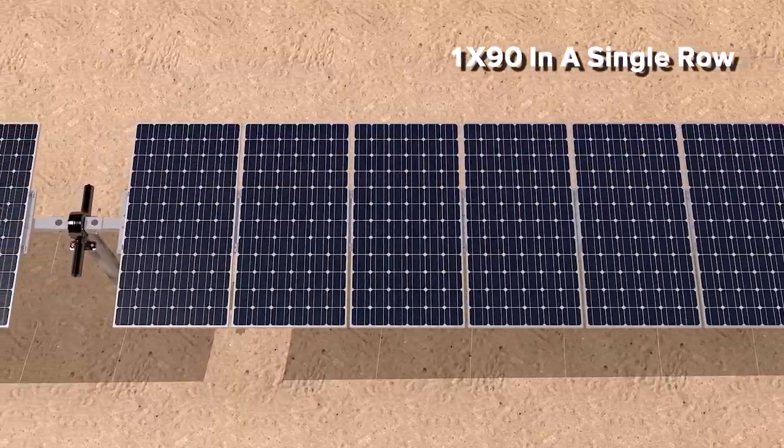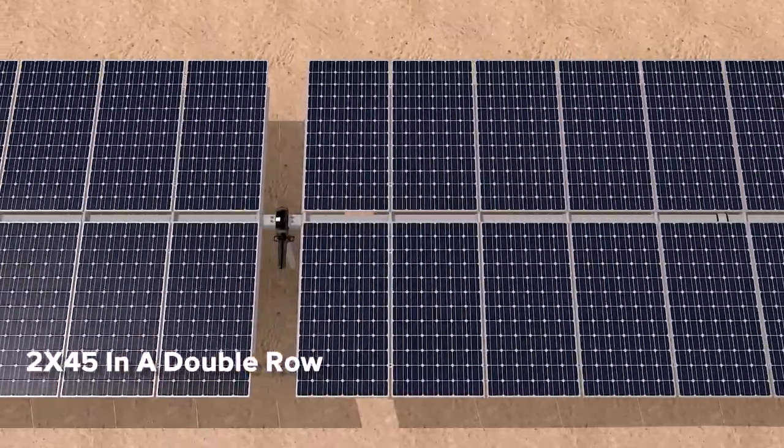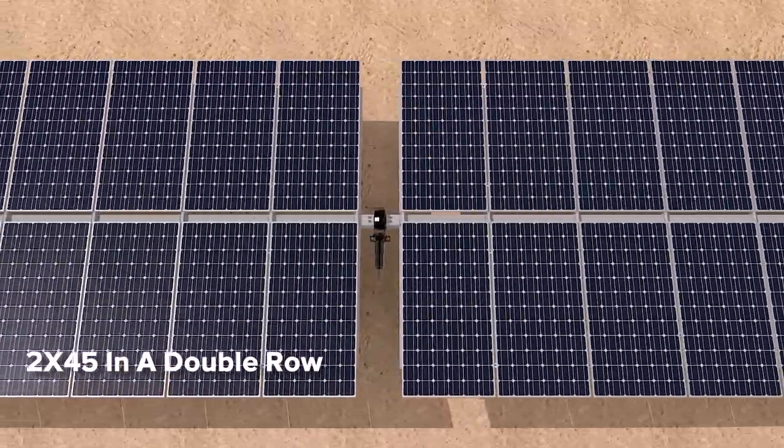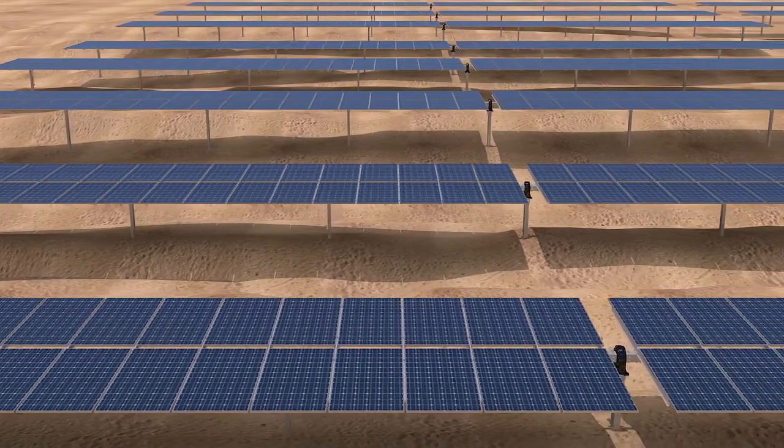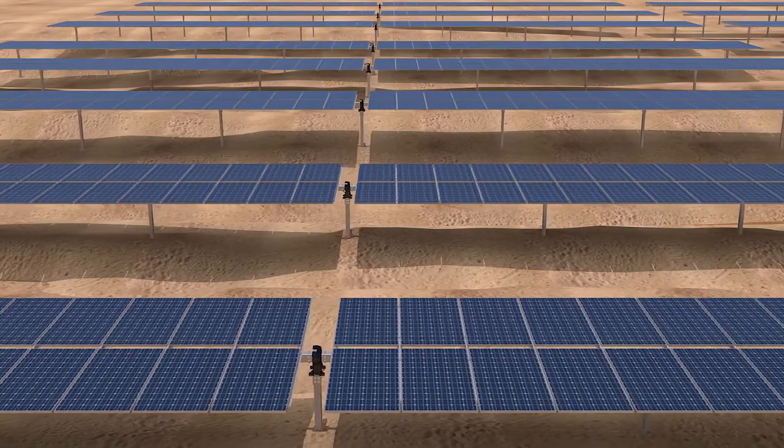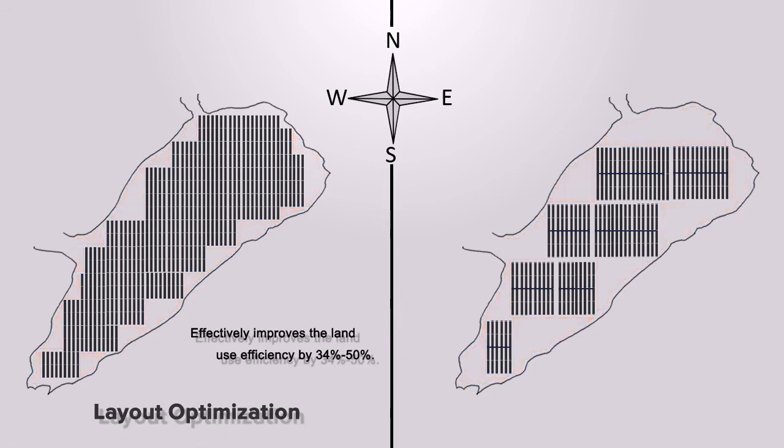The number of PowerFit modules can reach up to 1 by 90 in a single row and 2 by 45 in a double row. This flexible combination is more conducive to the optimization of the layout design and effectively improves the land use efficiency by 34% to 50%.